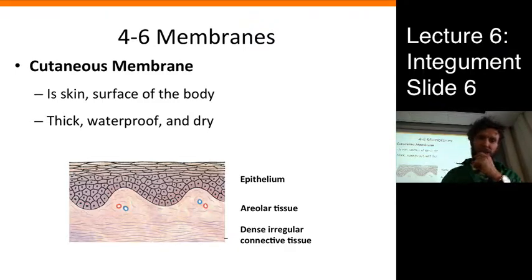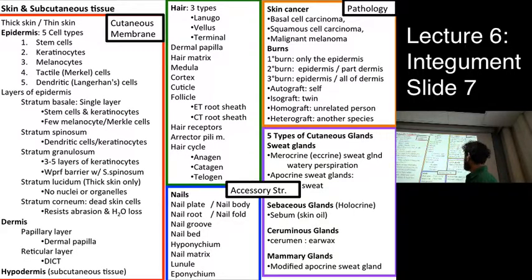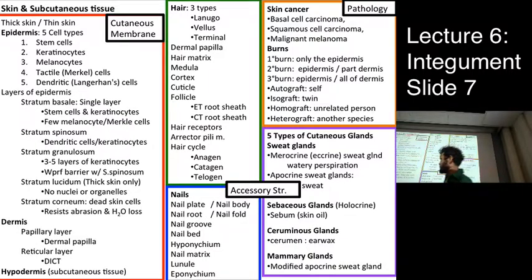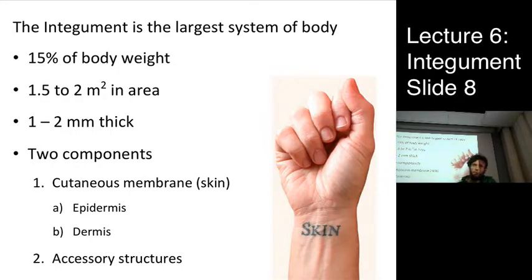The fourth type of tissue membrane is the cutaneous membrane — skin. It's thick, waterproof, and dry. We're about to talk about skin. It's 15% of your body weight — for someone at 150 pounds, that's about 22 pounds of skin. It's about two square meters in area and only two millimeters thick. It has two components: the epidermis and the dermis, which are part of the cutaneous membrane, along with accessory structures.